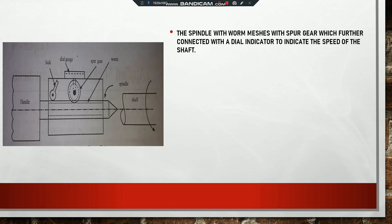The spindle with worm gears meshes with a spur gear, which is further connected to a dial indicator to indicate the speed of the shaft. When the conical spindle rotates, the worm gears mesh with the spur gear, causing it to rotate. The spur gear is connected to the dial gauge to indicate the speed.